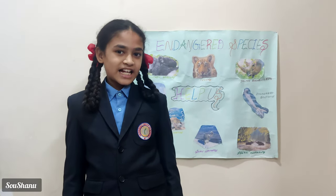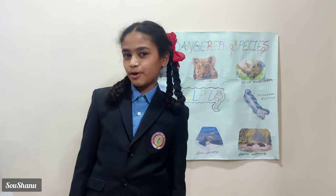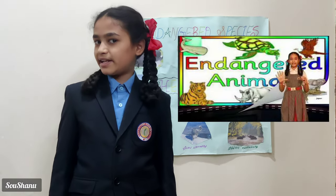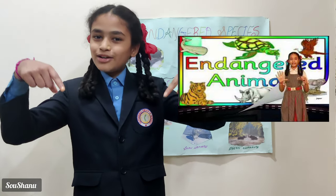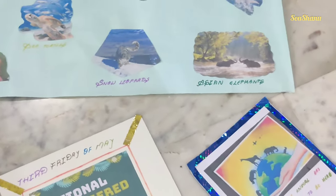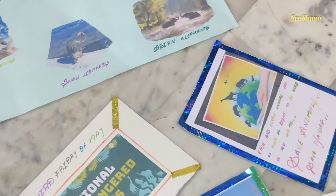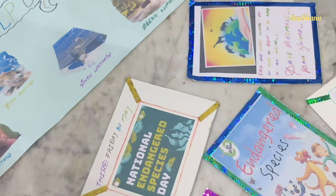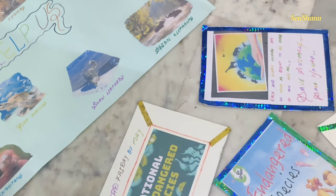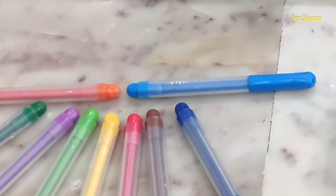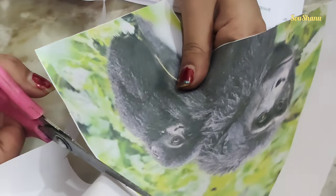Now I am done with the project explanation. Let's move on to the project making. Don't forget to watch my animated video — link below. For this we need sketch pens, scissors, glue, and chart paper. I am using endangered animal prints listed in 2022.